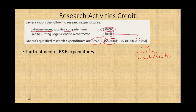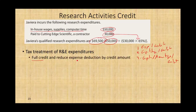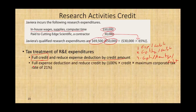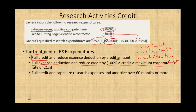Those three options are still available to us, and we can combine them with a credit. Option one: take the full credit and reduce the expense deduction by the credit amount. Option two: take the full expense deduction and reduce the credit — specifically, take 100% of the credit minus the credit times the maximum corporate tax rate of 21%. Option three: take the full credit and capitalize the research expense, then amortize over 60 months.